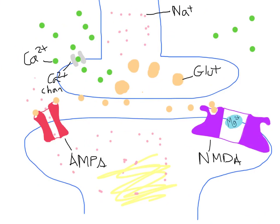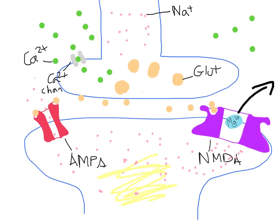On the other hand, the NMDA channel, even though it has bound a glutamate ion, can't open because it's blocked by a magnesium ion — the Mg2+ ion blocking this channel from fully opening. In order for the NMDA channel to properly open, there has to be enough positive charge from the sodium ions let in by the AMPA channel to develop a strong positive charge around the NMDA channel in the postsynaptic membrane and force the magnesium ion out. It's a simple case of like charges repelling, and the magnesium ion is ejected because of the prevalence of sodium ions in the postsynaptic neuron membrane.